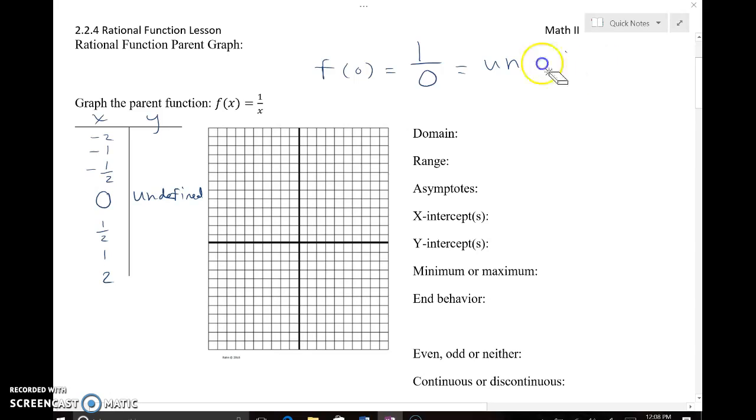We're going to put undefined in our chart for our x and y values. However, when we start to plug in some of these other x values, like negative 2 for instance, 1 divided by negative 2 is simply negative 1 half, or negative 0.5. So when I go to graph that, left 2 and then down a half, I'm somewhere like this.